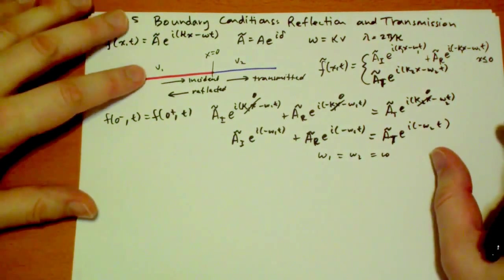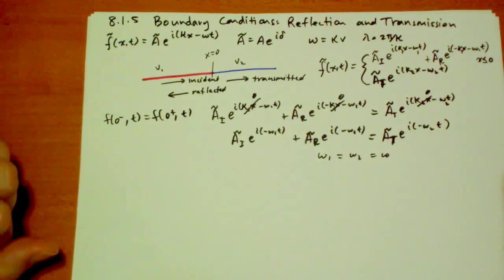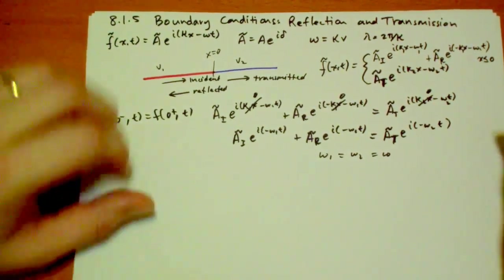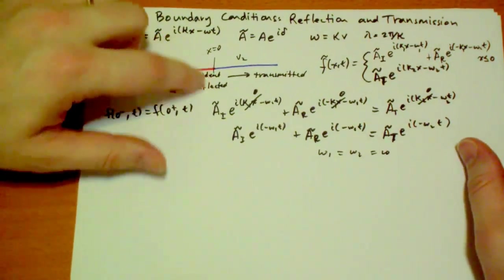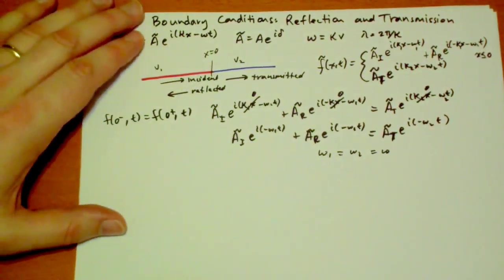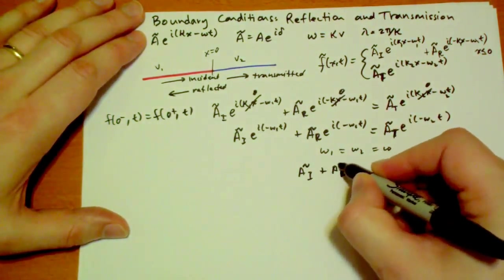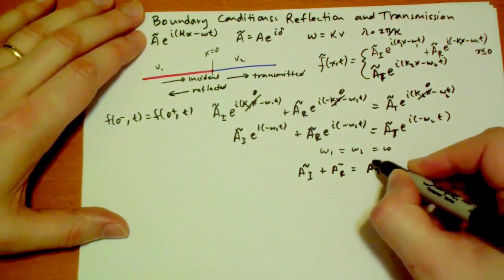This is an important conclusion. It must be true if we're going to satisfy this condition that the string has to meet at the middle there. And we also have the result that the incident amplitude plus the reflected amplitude has to equal the transmitted amplitude.